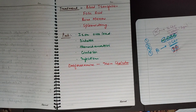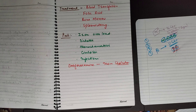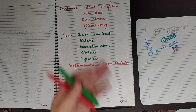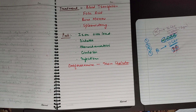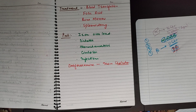Since thalassemia is a genetic disorder, there is no permanent cure, but symptomatic treatment can be given. Blood transfusions are a mainstay — these persons are lifelong dependent on blood transfusions, receiving 10 to 12 units of blood in a year. We can give folic acid for maturity of blood cells, bone marrow can be transplanted, and in some cases splenectomy can be performed to reduce destruction of RBCs.